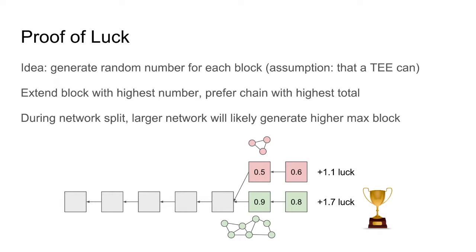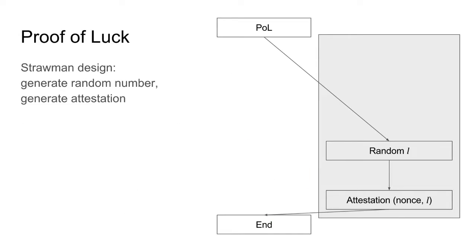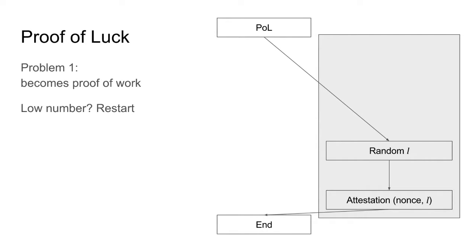So naively, you generate a random number, you get an attestation, and that's it. What are the problems? Well, first off, it's kind of like Proof of Work — we don't have rounds here yet. We're just generating random numbers and generating an attestation. So you can just keep iterating, and everyone just says 'I got a large number, I got a large number, I got a large number.' It's a never-ending race to just get the larger number and have their block get added. So it becomes almost like Proof of Work, because you're always just doing all this work for no reason.